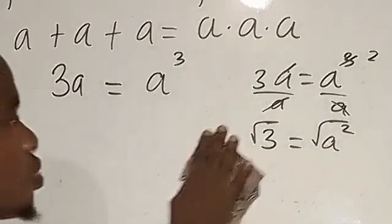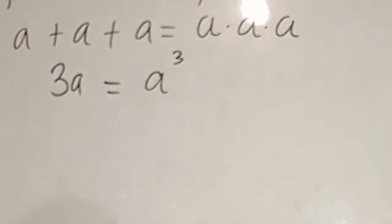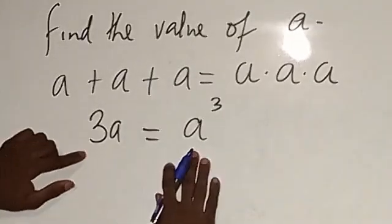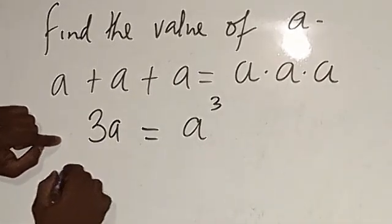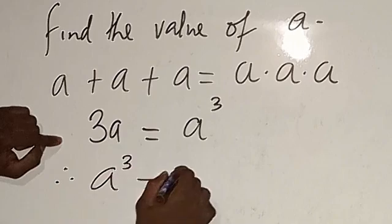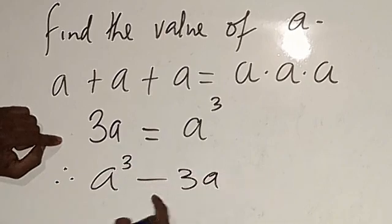So therefore, this is what we're going to do. I'm going to take this to this side, that's going to be a³ - 3a = 0.